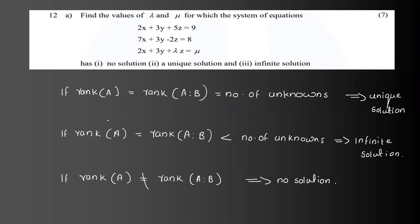We look at all 3 solution types. If rank of A equals rank of [A|b] equals number of unknowns, then unique solution. Here the unknowns are x, y, z — so number of unknowns is 3. If rank of A equals rank of [A|b] but less than number of unknowns, then infinite solution. If rank of A is not equal to rank of [A|b], then no solution.